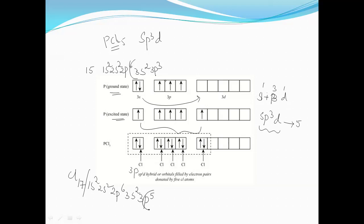Chlorine has atomic number 17, with configuration 1s2, 2s2, 2p6, 3s2, and 3p5, so there is one unpaired electron in the 3p orbital of chlorine. This electron of opposite spin can participate in overlapping with the sp3d hybrid orbital of phosphorus, resulting in the formation of PCl5.